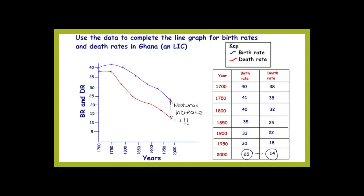You should have ended up with a graph that looks something like this. The birth rate and death rate are both coming down, but the death rate is dropping much more rapidly than the birth rate. By the time you get to the year 2000, the difference between the birth rate and death rate is 11 people per thousand in the population — a much higher natural increase in LICs than in HICs. Why is birth rate taking longer to decrease than death rate? Children are needed to work the land, there is still strict religion, and there's lack of access to contraception.